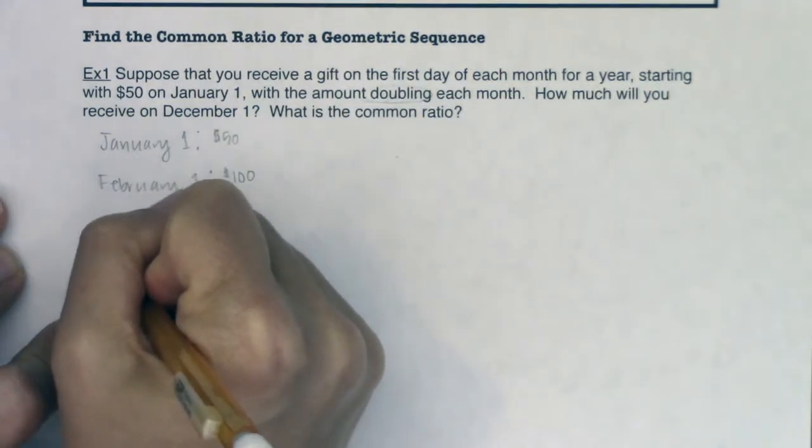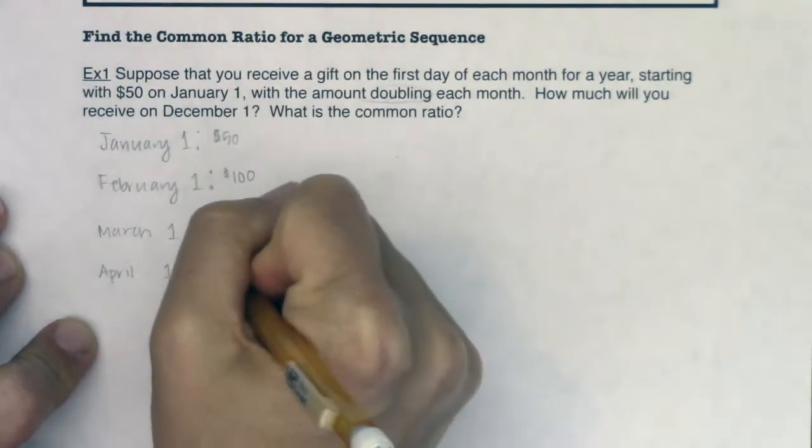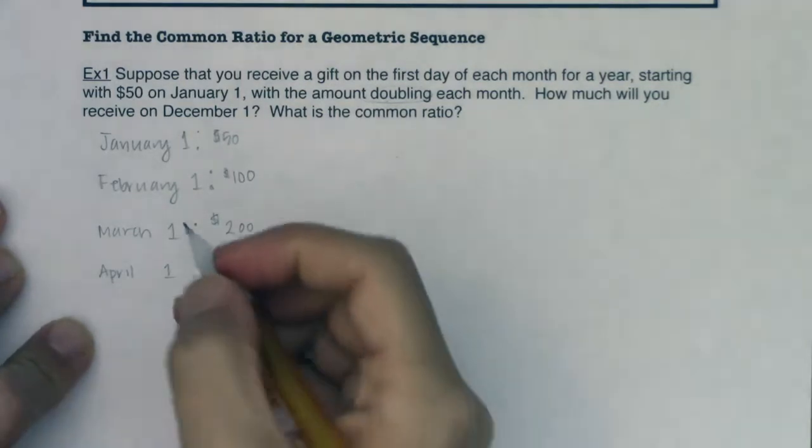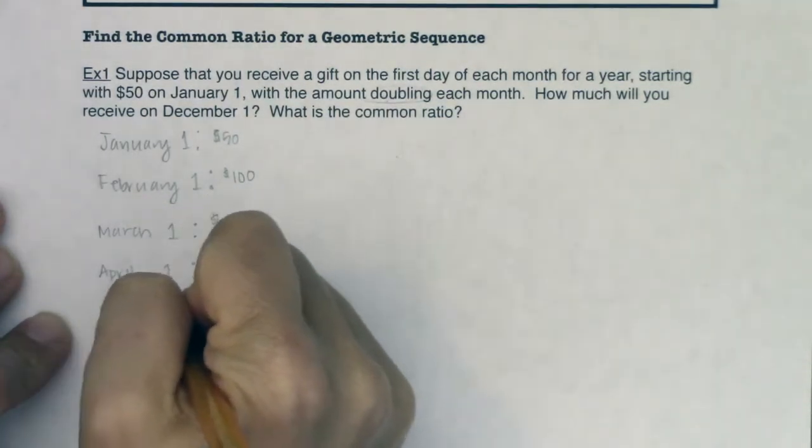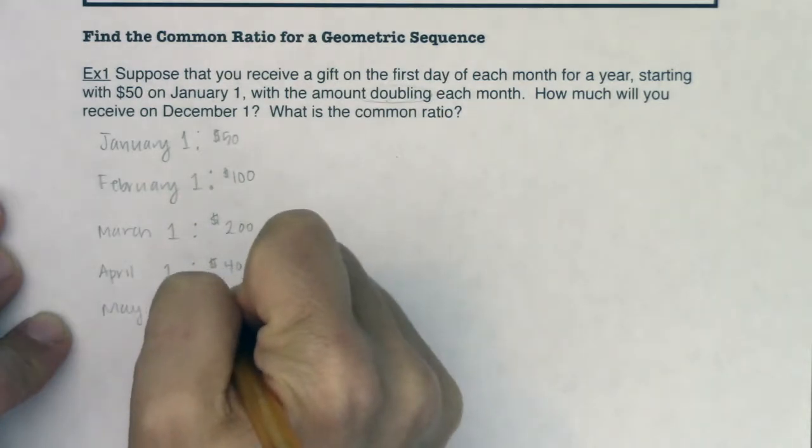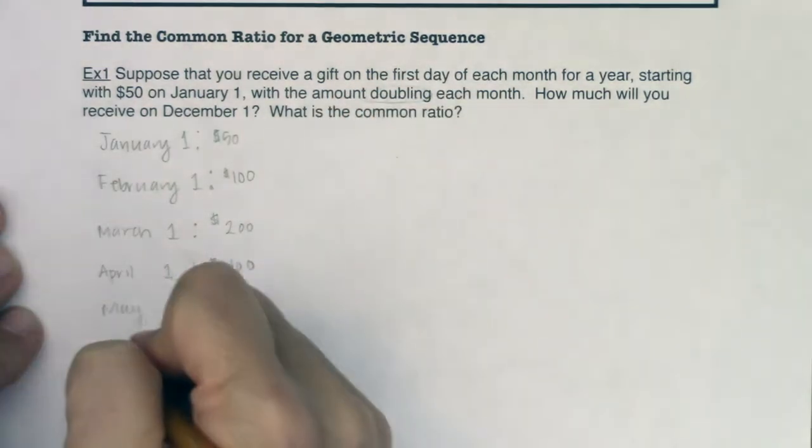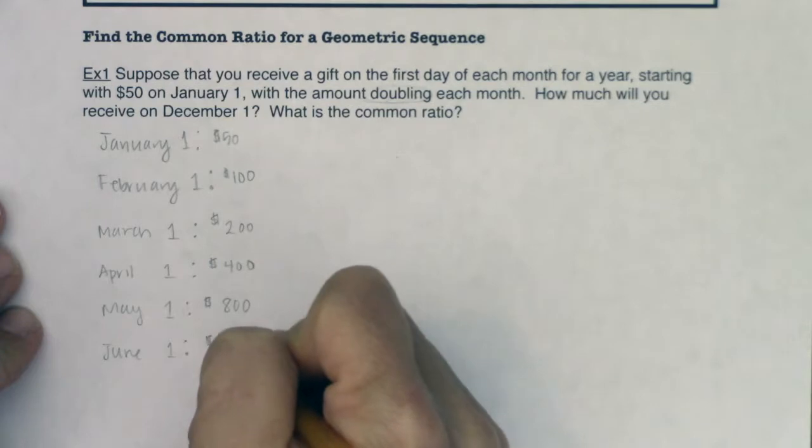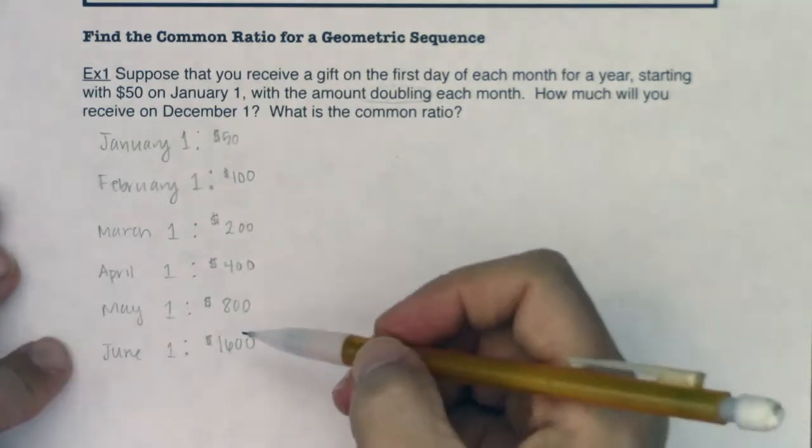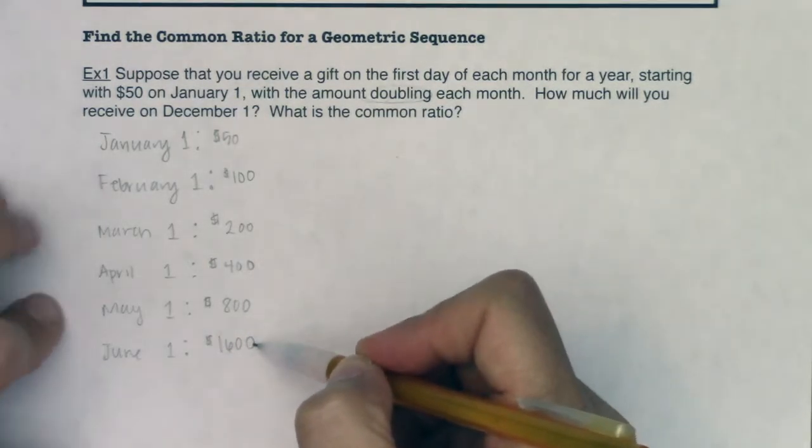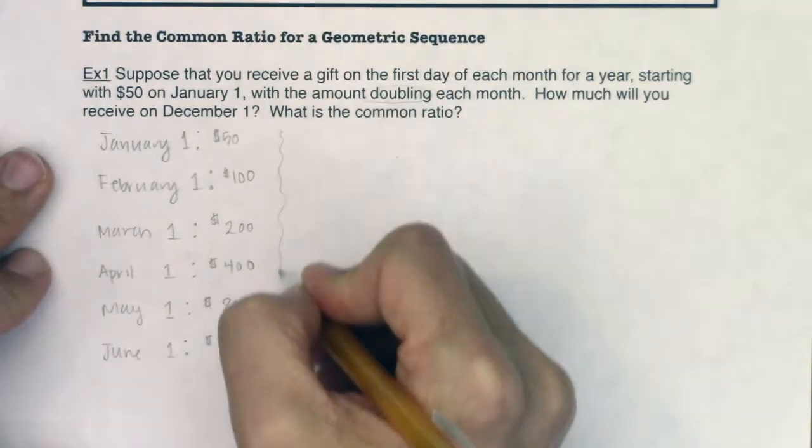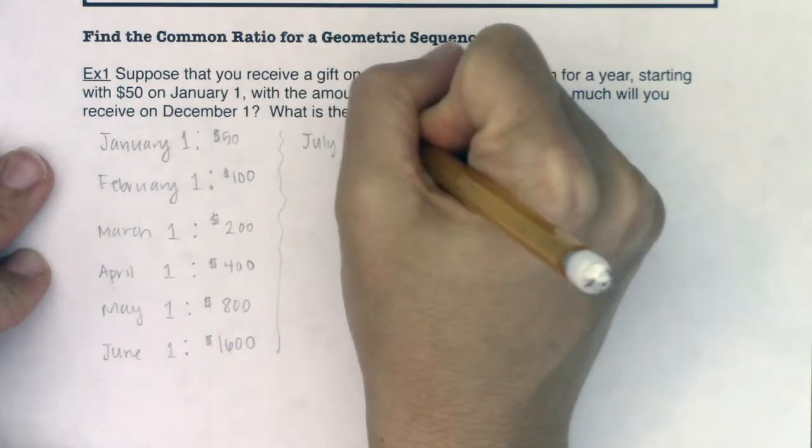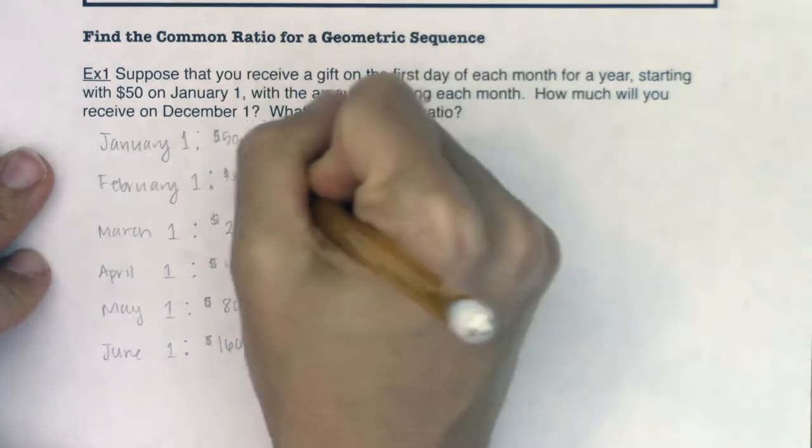On April 1st, when I double this, I will get a gift of $400. That's pretty sweet. Let's see, May 1st, 400 times 2, I'm going to get $800. Let's try June. When I double, double 800 gets me to $1600. These are getting pretty nice. I would love to receive $1600. Let's see what happens the last half of the year. On July 1st, I'm going to double this. I'm going to get $3200. Pretty sweet.